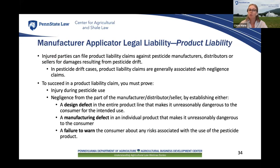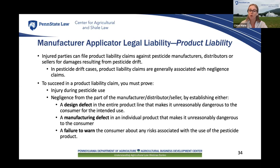An injured party may also file a product liability claim against a pesticide manufacturer, distributor, or seller for damages caused by pesticide drift. Product liability can fall under both negligence and strict liability, though in pesticide drift lawsuits, product liability is generally associated with negligence claims. To succeed in a product liability claim, you must show that you were injured due to pesticide exposure and that the manufacturer, distributor, or seller was negligent — either by establishing a defect in the design of the entire product line that makes it unreasonably dangerous for its intended use, or by establishing a failure to warn the consumer about risks associated with the use of the product.